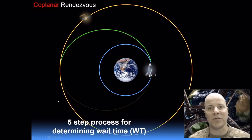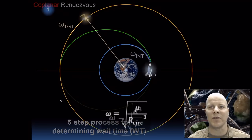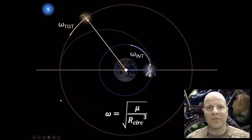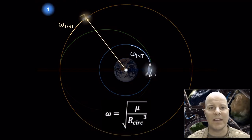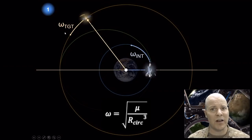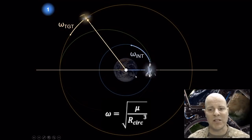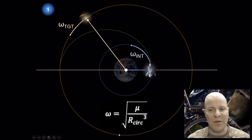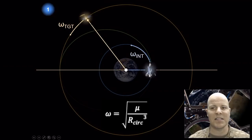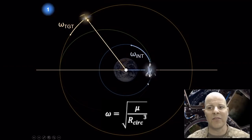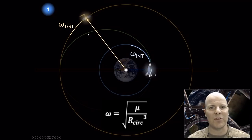We're going to have five steps to figure out what our wait time is going to be. Step one involves calculating the angular velocities of both the target spacecraft and the interceptor spacecraft. We use an equation very similar to our mean motion equation, relating angular velocity to the semi-major axis of whichever spacecraft we're talking about. We do this for both target and interceptor.